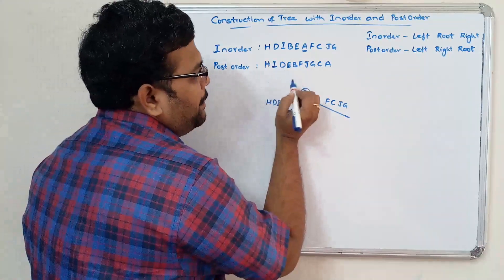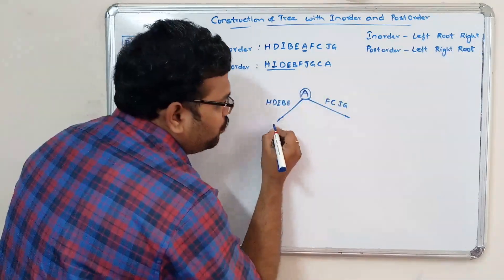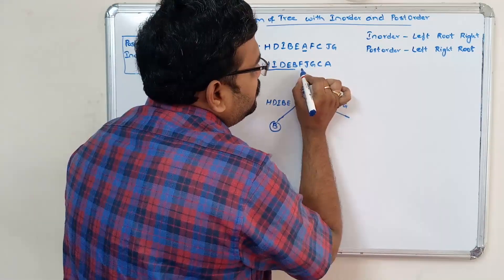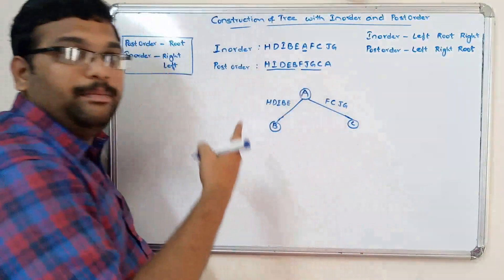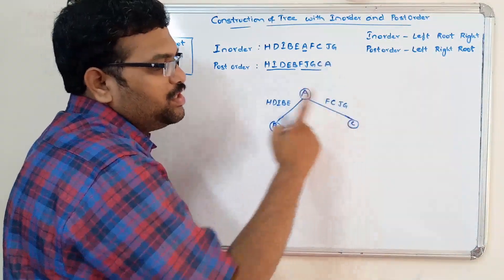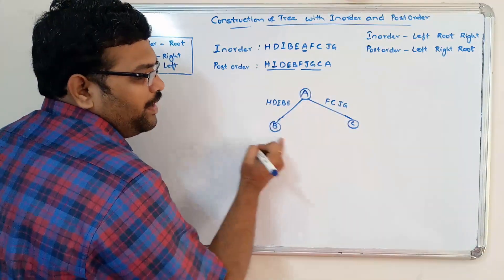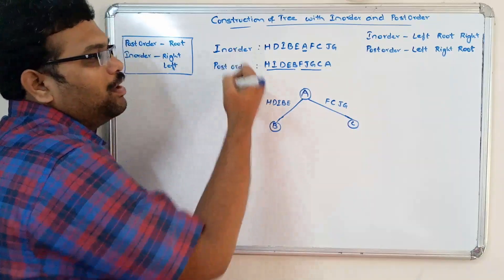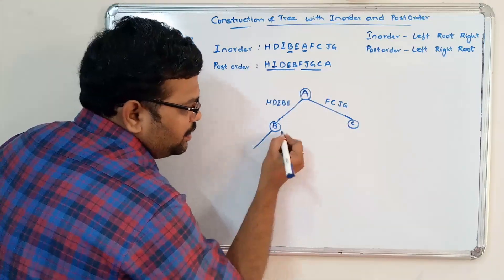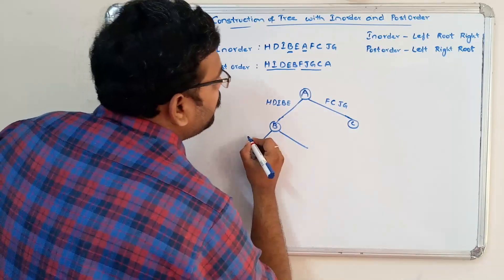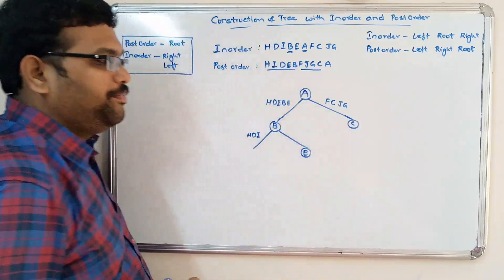In the postorder for the left group — H, D, I, E, B — the last element is B, so B is the root node. For the right group — F, J, G, C — the last element is C, so C is the root node. Coming back to B as root in the inorder: there are three elements on the left chain — H, D, I — and one element on the right chain — E.